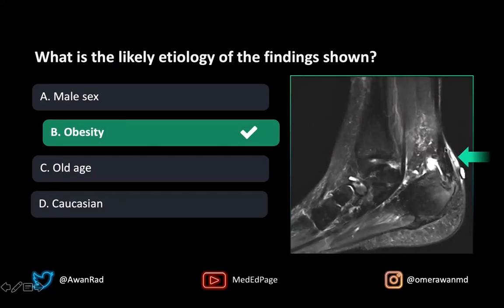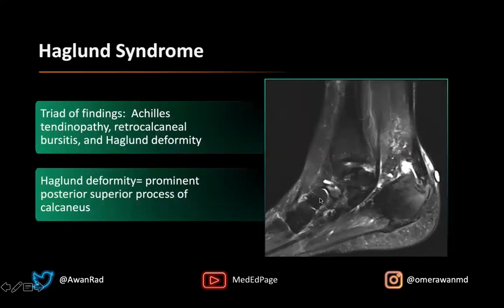We can see here again, just to show you: this here is the Achilles tendinopathy, this here is the retrocalcaneal bursitis, and then of course we have the prominent posterior superior process here of the calcaneus suggesting the Haglund deformity. So it's these three findings that suggest Haglund syndrome.